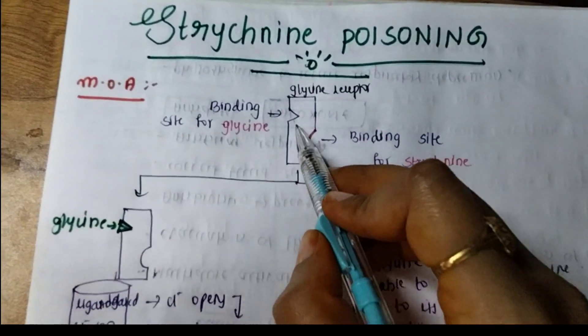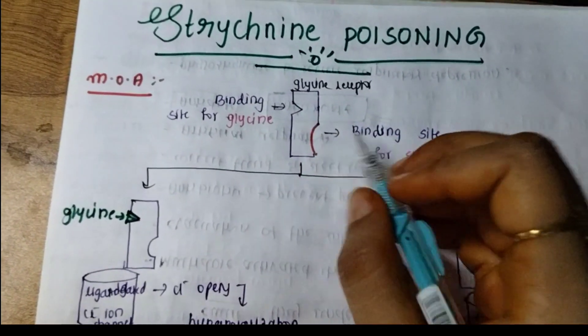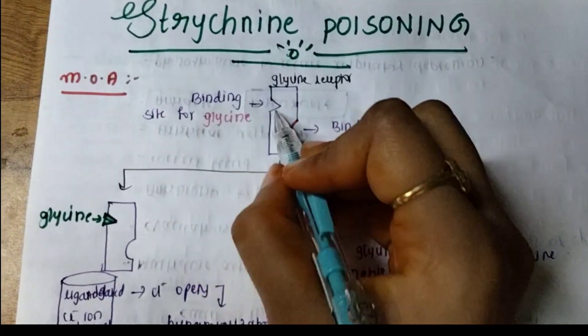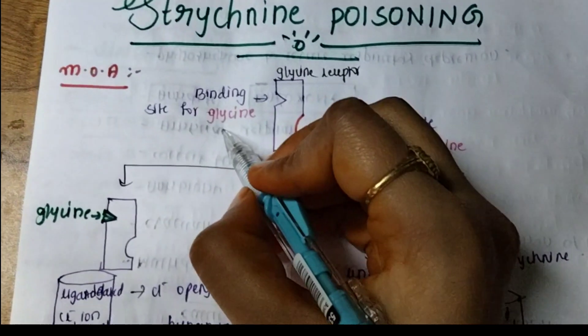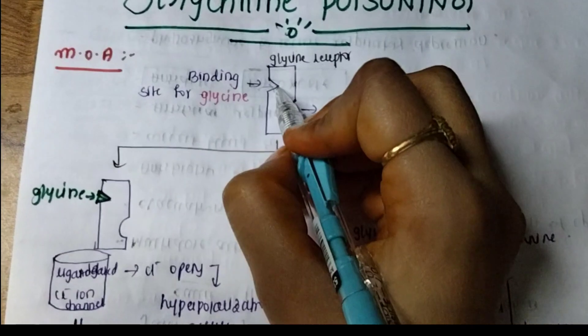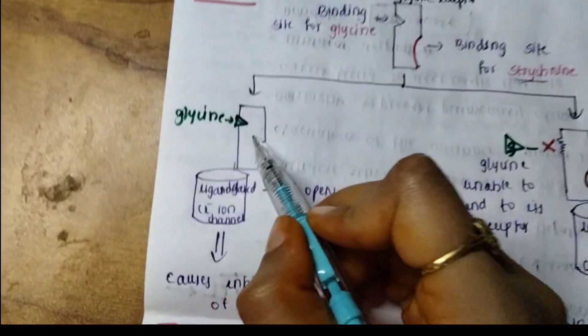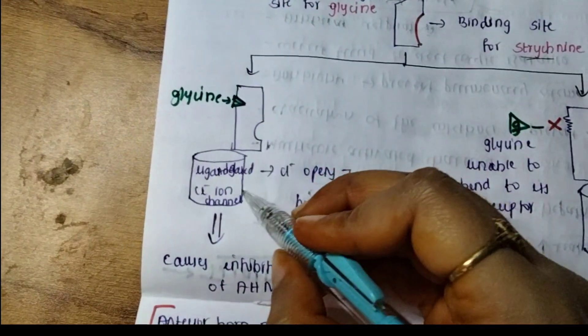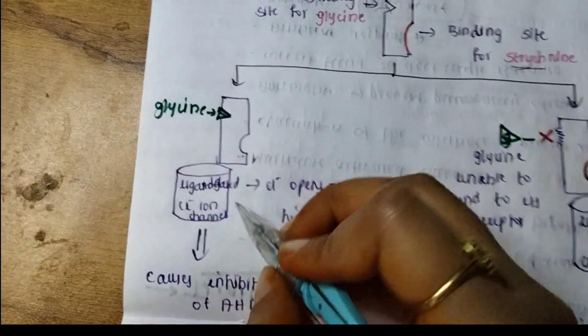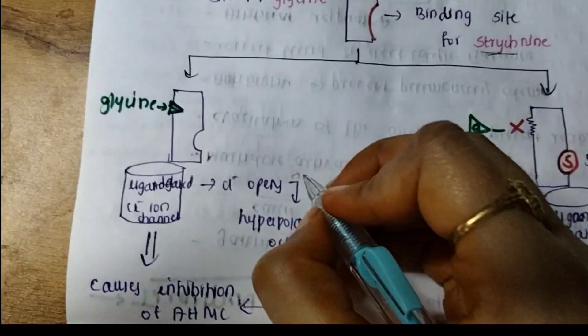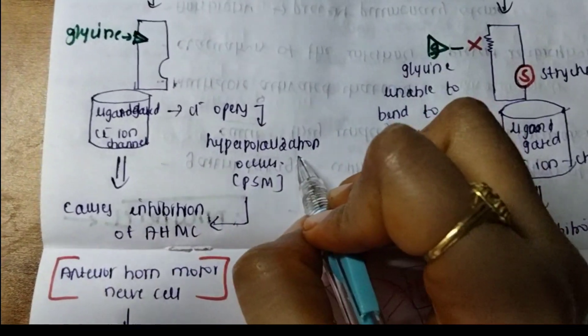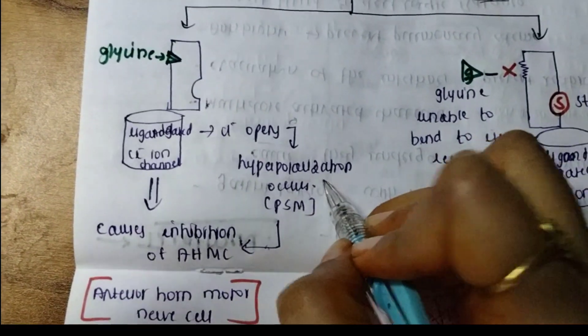Now, remember there is no strychnine present. The binding site for glycine is here, so glycine will come and bind to this receptor. Because glycine is bound, this receptor — which is a ligand-gated chloride ion channel — will cause the channel to open, and there is a flow of chloride ions out.